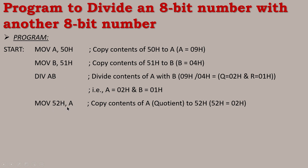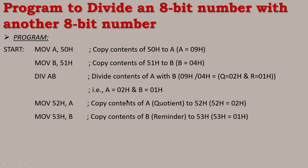MOV 52H, A means the quotient is copied to RAM location 52H, so 52H equals 02H hexadecimal. The next instruction is MOV 53H, B — register B holds the remainder 01H, so the contents of register B are copied to RAM location 53H, and 53H equals 01H hexadecimal.